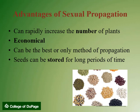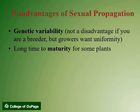In the horticulture industry, many plants are started from seed because it is a quick and economical method. For successful germination, the proper environmental and cultural conditions must be provided. These conditions include temperature, moisture, light, and medium. Some advantages of sexual propagation include the rapid increase of the number of plants, and seeds can be stored for long periods of time and still germinate. Disadvantages include genetic variability, which is not a disadvantage if you are a plant breeder, but growers want uniformity in plants. A second disadvantage is that it takes a long time for some plants to reach maturity.